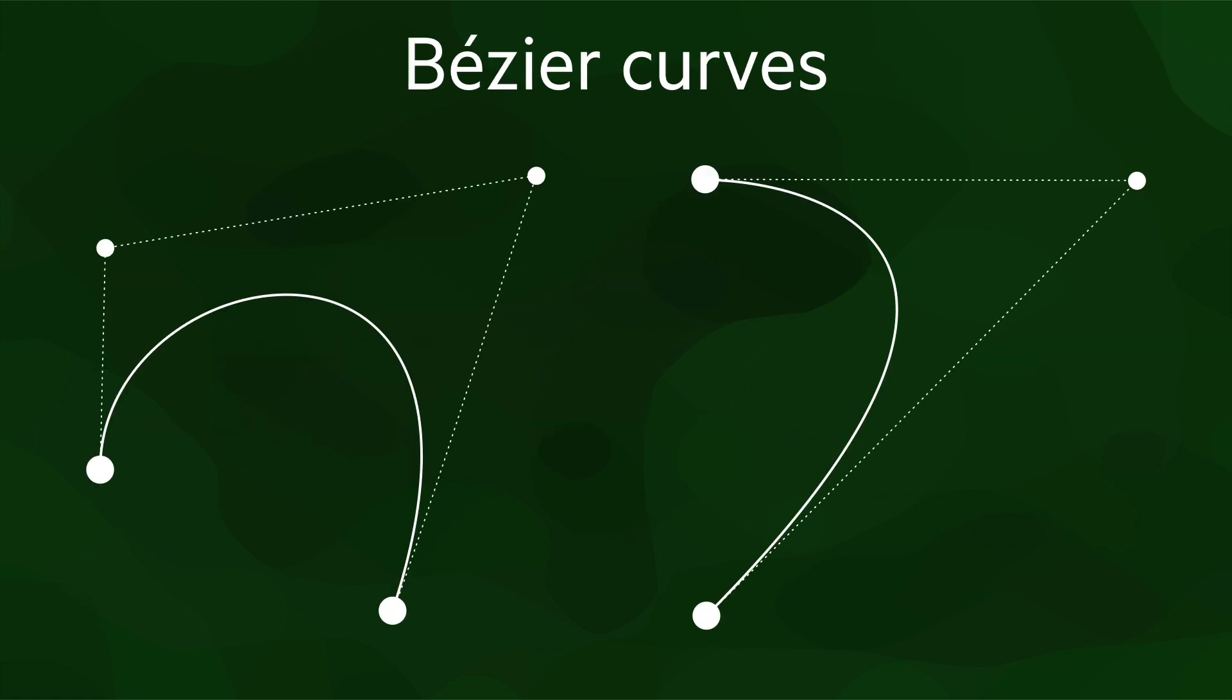A Bézier curve is a parametric curve that is modeled based on a sequence of points. If you've ever used a vector-based graphics editor, you've likely used Bézier curves, or they're often called paths.